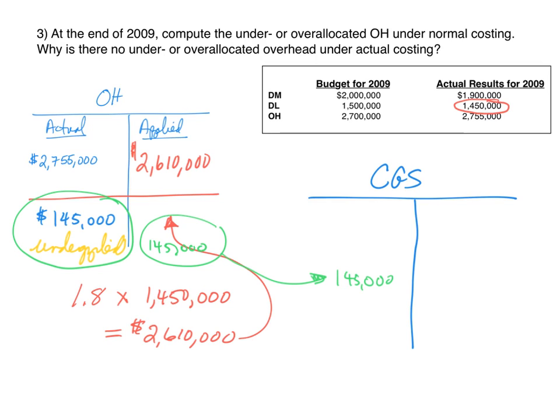Keep in mind: when we're underapplied, we end up increasing cost of goods sold, which decreases net income. If we're overapplied, that will decrease cost of goods sold when we fix the problem, thereby increasing net income.